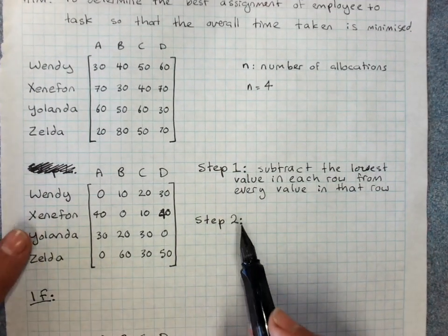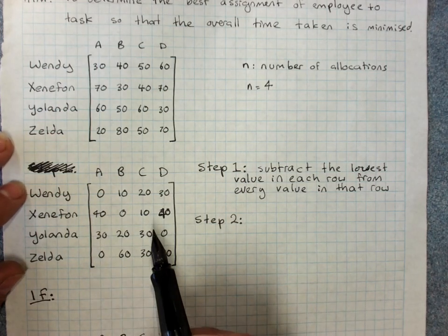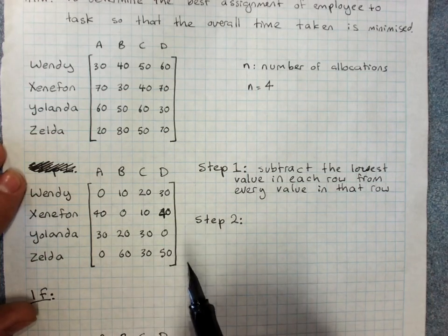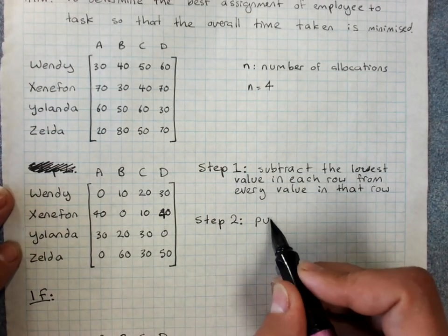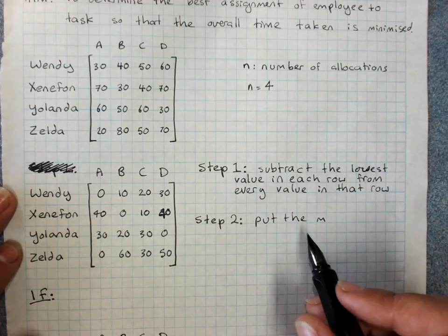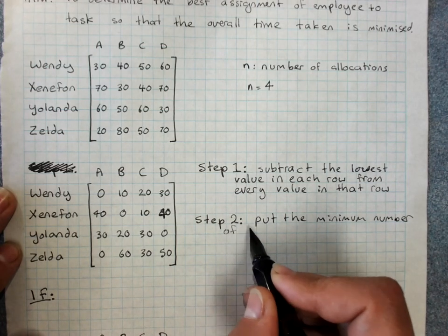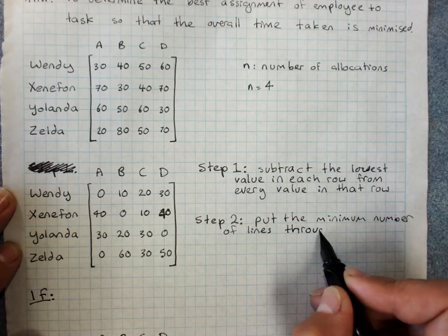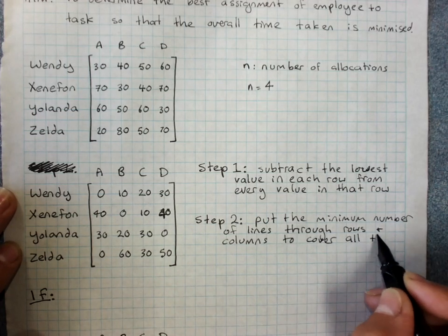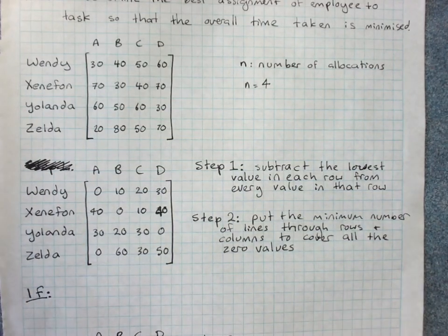Step two. Now we're going to do this step several times after every change we make. And this is checking have we got enough minimums. So we're looking for lots and lots of, we're looking for enough zeros that every person can be assigned to a task with a relative zero cost here. Put the minimum number of lines required to cover all the zero values. Horizontal and vertical lines only. So lines go through rows and columns. So there we go. Put the minimum number of lines through rows and columns to cover all the zero values.